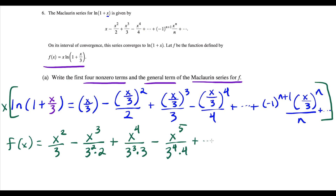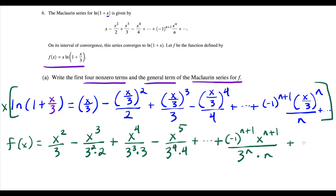So now we're just going to do this algebra for the general term. We have x to the n, but when we multiply by x it's going to make x to the n plus 1, and then divided by 3 to the n times n. And this will continue on forever. So this completes part A — we have the first four non-zero terms and here's the general term for our Maclaurin series.